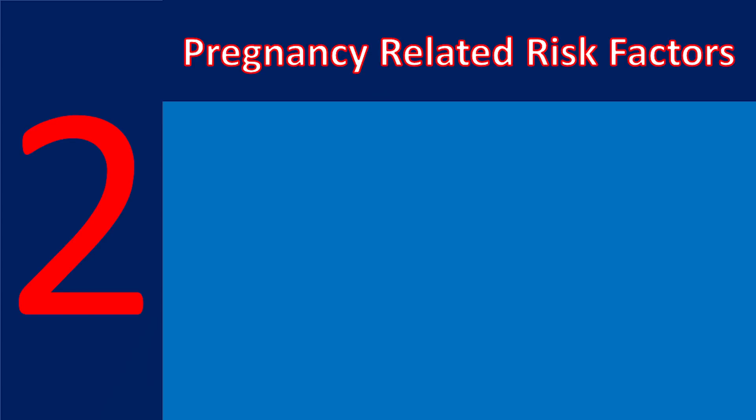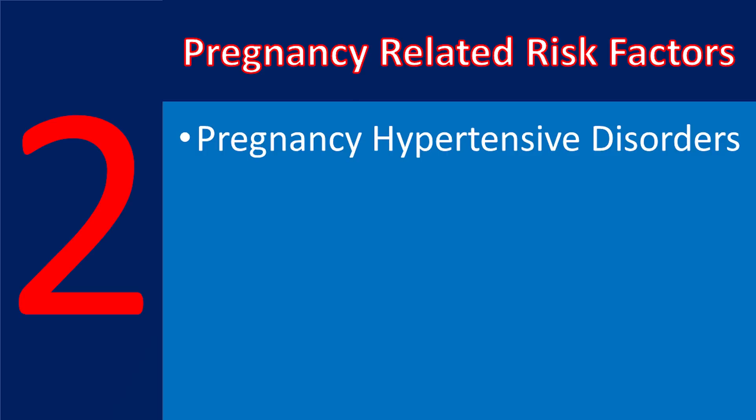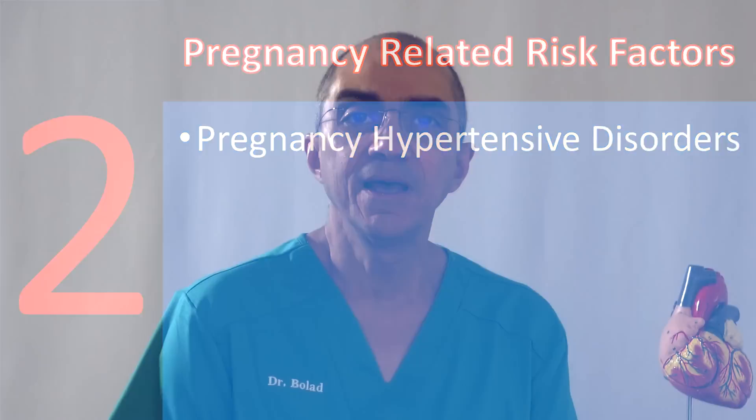A number of adverse pregnancy outcomes are associated with increased subsequent cardiovascular risk. Screening for and managing cardiovascular risk factors is an important component of care for patients who have experienced adverse pregnancy outcomes. These factors include high blood pressure of pregnancy — also known as hypertensive disorder of pregnancy — including preeclampsia, gestational hypertension, and chronic hypertension occurring during pregnancy, as well as high blood pressure after delivery and increased risk of atherosclerotic cardiovascular disease.